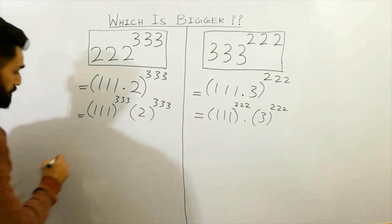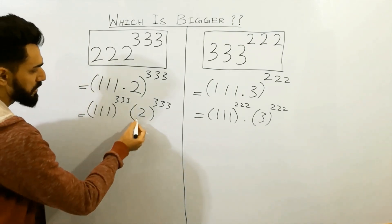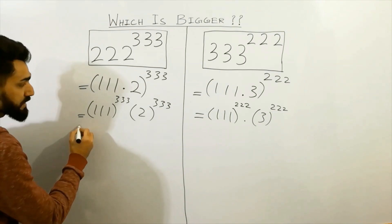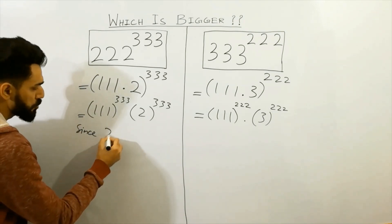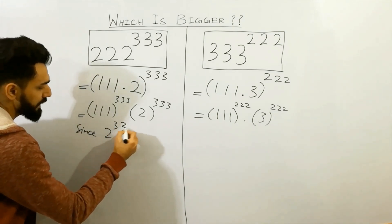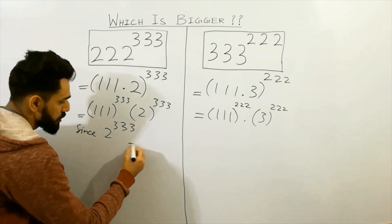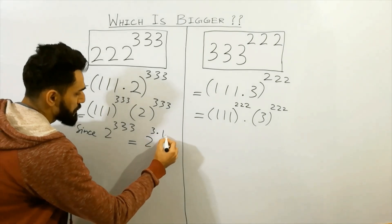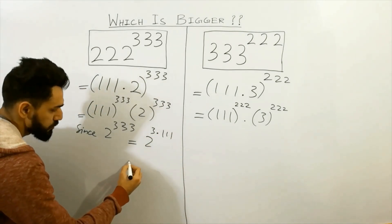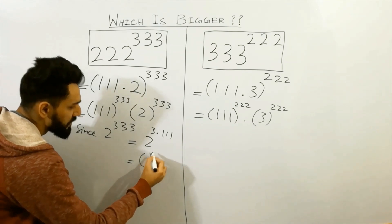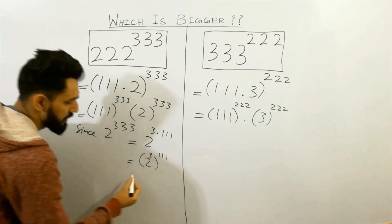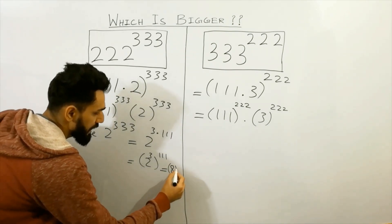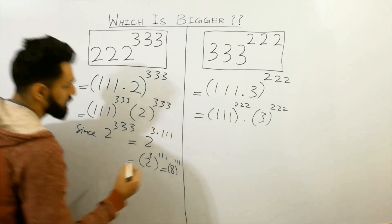Hope that you have cleared the point. In the next step, you can check that here two raised to power three three three. Since two raised to power three three three can also be written as two raised to power three multiplied by triple one, and you can also write here two cube raised to power triple one. Two cube is always equal to a, so you can write here a raised to power triple one.